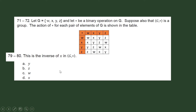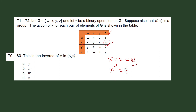This asks for the inverse of X in G. We need element A such that when we pair X with A using our binary operation, the result is our identity element W. Looking at the table, X star Z is equal to W, and W is our identity element. So the inverse of X under our binary operation is equal to Z. Our answer here is letter B.